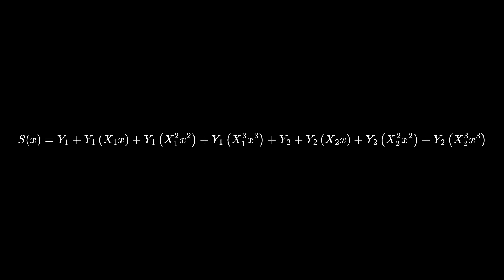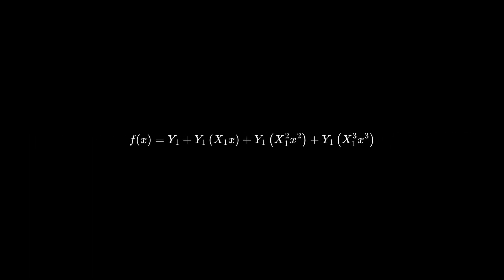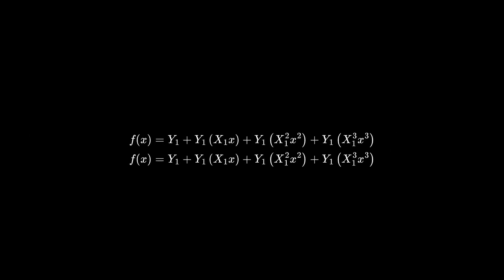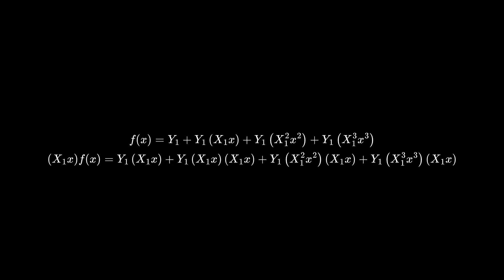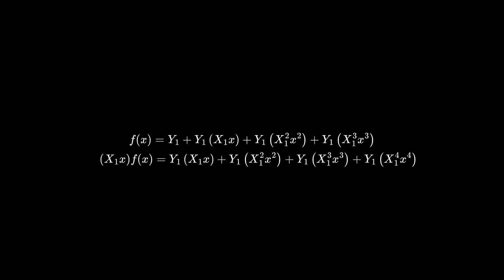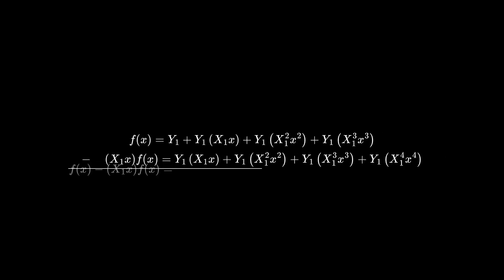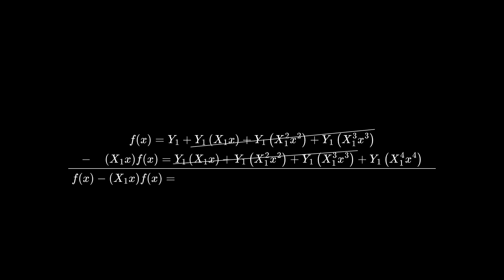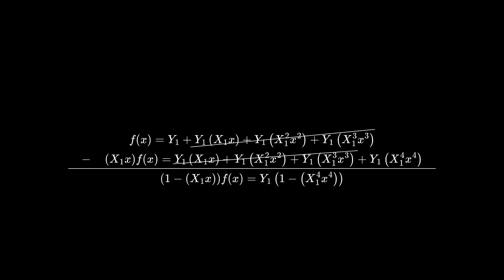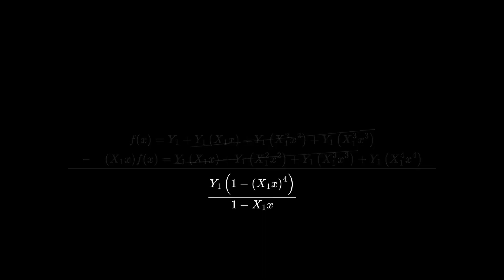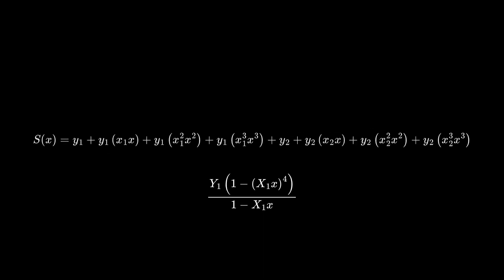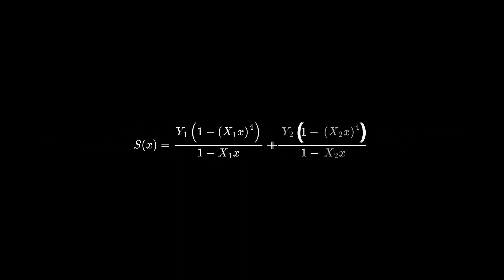We'll expand, and now we can factor out a big x from these terms, a big x squared from these, and so on. You might notice that these are just geometric series. What that means is that we can split these up, then take a copy of this equation, multiply it by small x times big x, then subtract the two equations. The left side turns into this, and on the right all these terms cancel out, leaving just these two. With some factoring we can get this, and then isolate. Do the exact same thing to the other part we split off, and we get this.